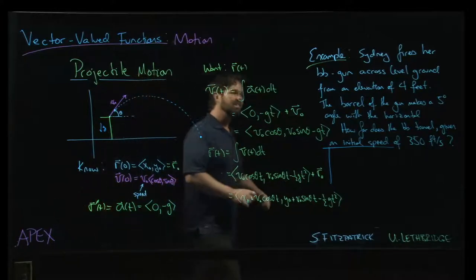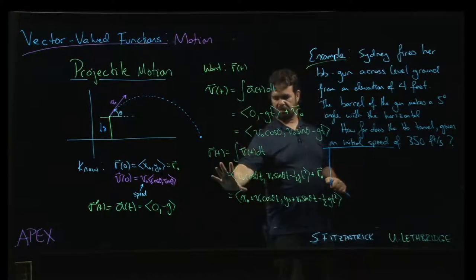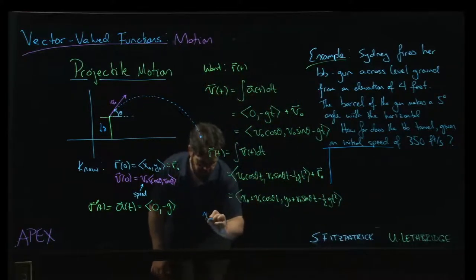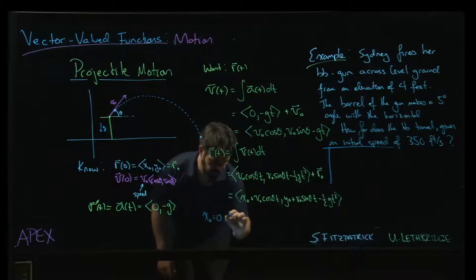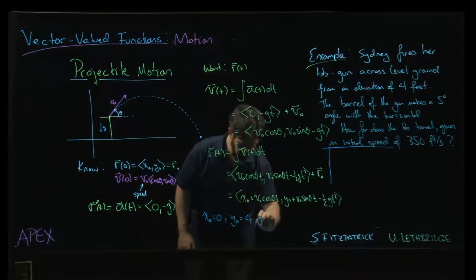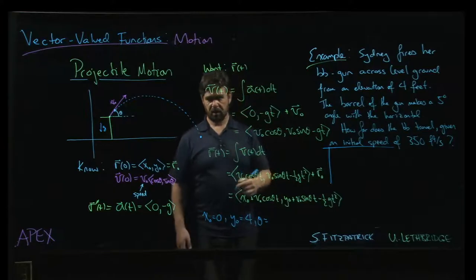So the idea here is you can pretty much jump straight to the result that we derived here. For simplicity, we can take x₀ to be zero, y₀ is going to be an initial elevation of four, and theta is five degrees.